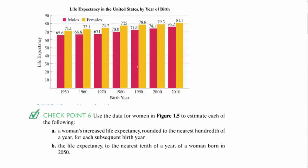The problem is asking us to find a woman's increased life expectancy, rounded to the nearest hundredth of a year, for each subsequent birth year. So what we're looking for is the increase in life expectancy for women — specifically, the change in age, meaning how much older they're going to live for every calendar year later. We're looking at age increase per birth year.